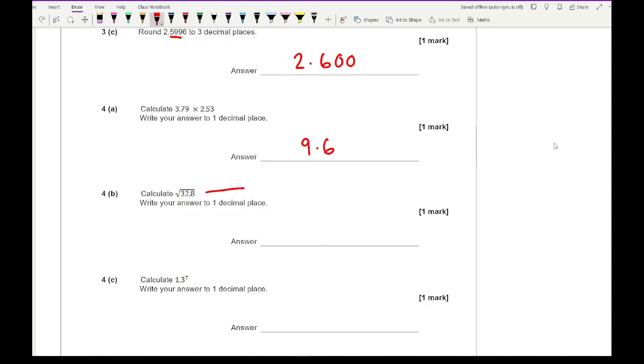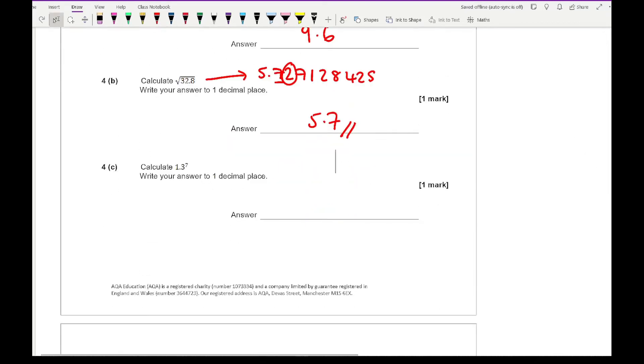For this one, we want to calculate the square root of 32.8. If I enter that on my calculator, I get 5.727128425. Rounding this to 1 decimal place gives 5.7. For question 4C, we have 1.3 to the power of 7. Entering that on the calculator gives 6.2748517. Rounding this to 1 decimal place becomes 6.3.